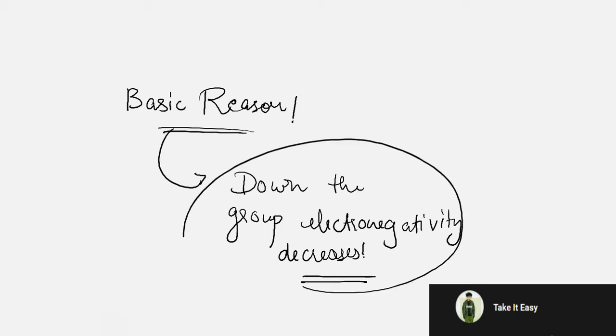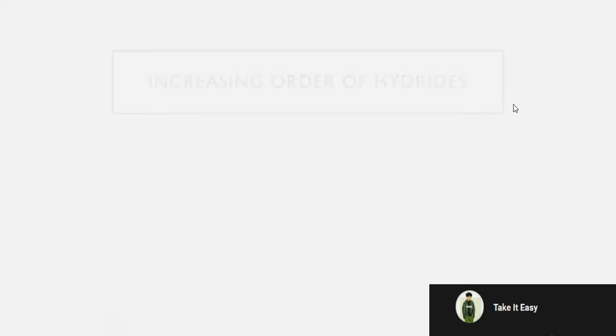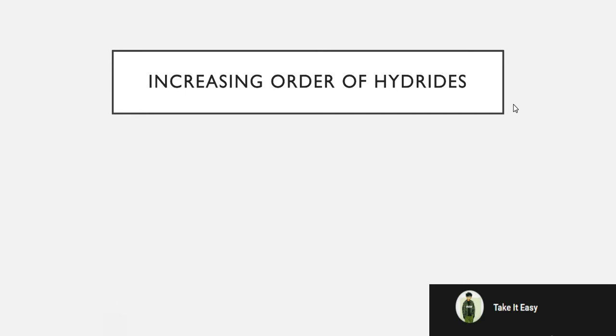Down the group, the electronegativity decreases. That is why there is a decrease in the bond angle, thermal stability, Lewis basicity, dipole moment, and hydrogen bonding. Because electronegativity decreases and the size increases, that forms a basic reason for the decrease in these properties.